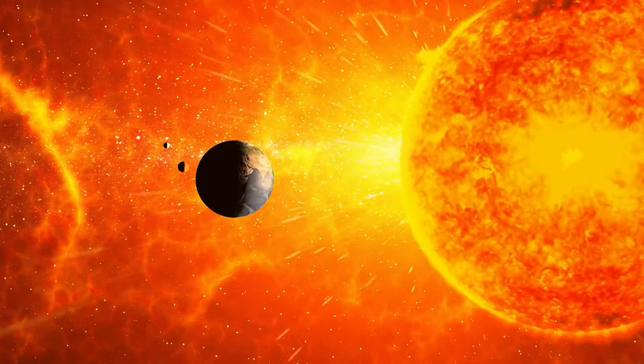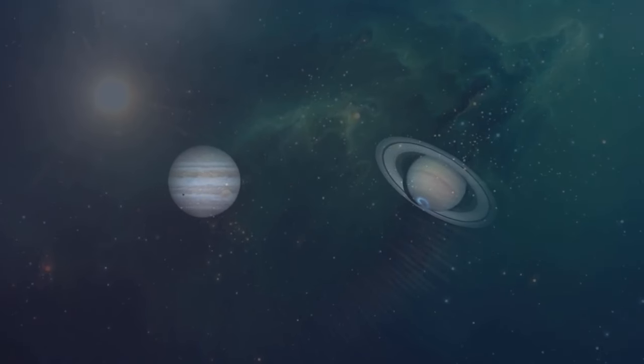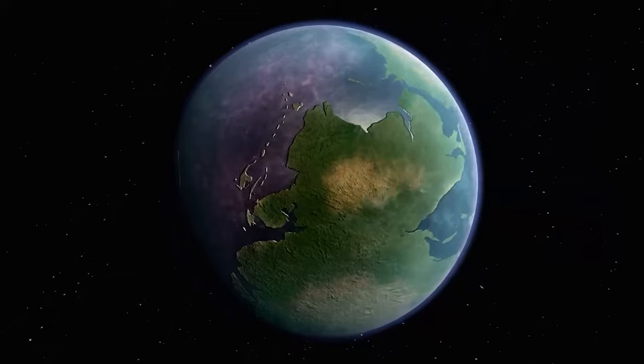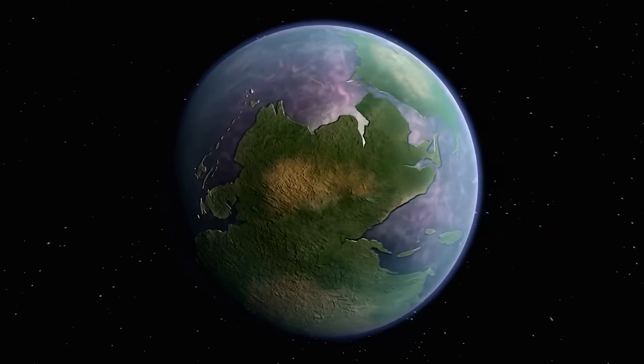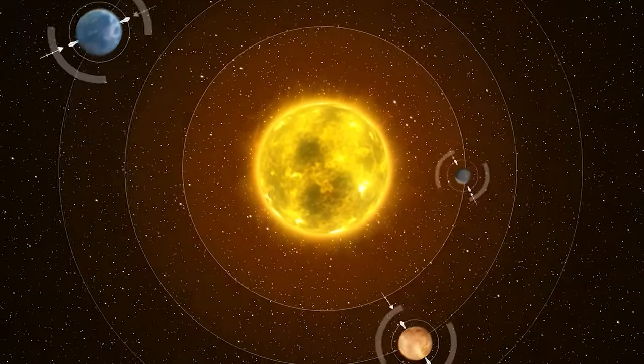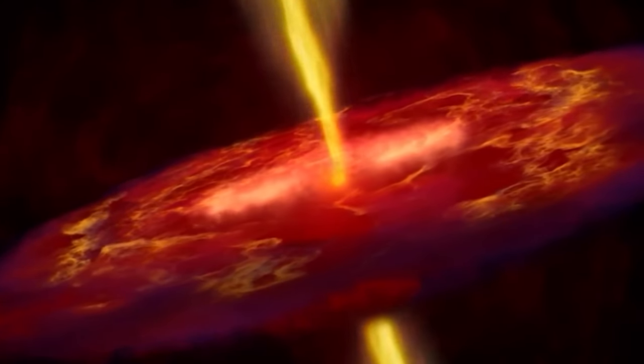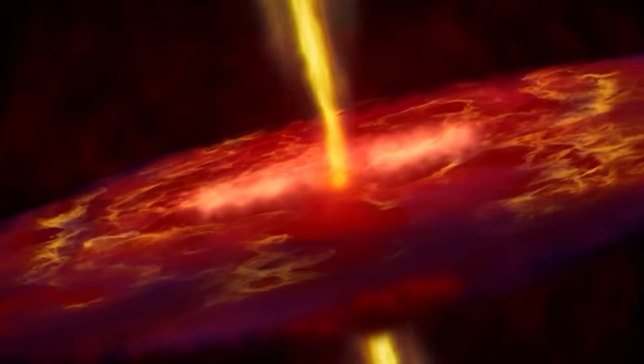While the core accretion model works for terrestrial planets, gas giants would need to evolve rapidly to grab hold of the significant mass of lighter gases they contain. But simulations with that model have not been able to account for this rapid formation. In those simulations, the process takes several million years, which is longer than light gases were available in the early solar system. But the core accretion model isn't the only explanation for how planets might come to be.